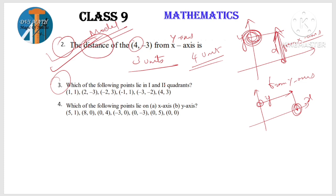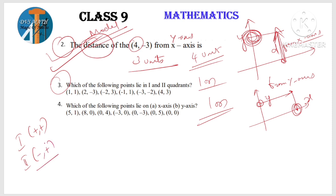Next question: Which of the following points lie in the first and second quadrant? In the first quadrant both coordinates are plus. In the second quadrant x is minus, y is plus. Look at the options and identify which points satisfy these conditions. Is that clear?